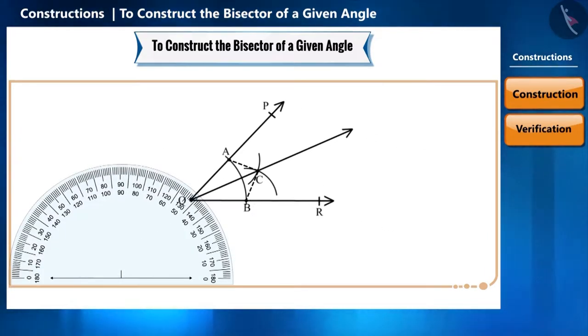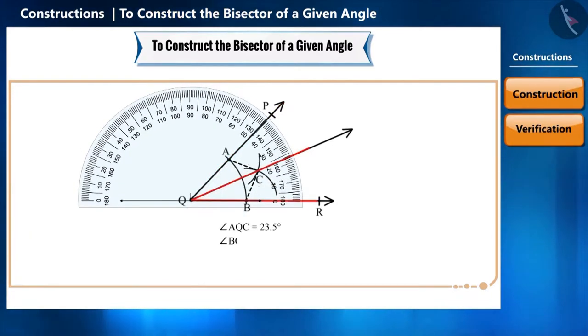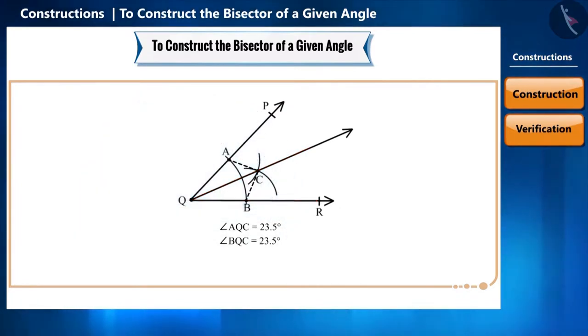Here, we can measure these angles with the help of a protractor. We can see that angle AQC is equal to angle BQC. Therefore, we can say that angle PQC and angle RQC will also be equal.